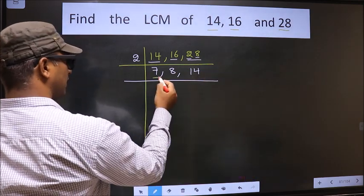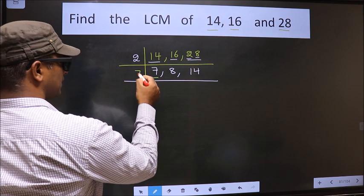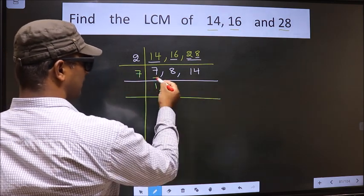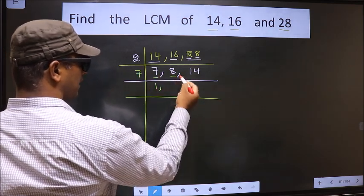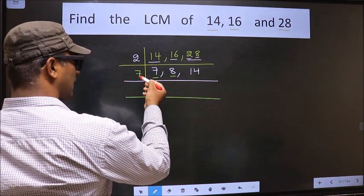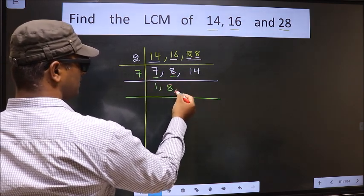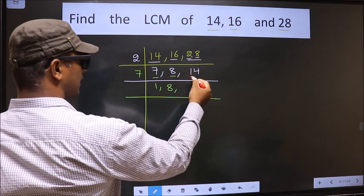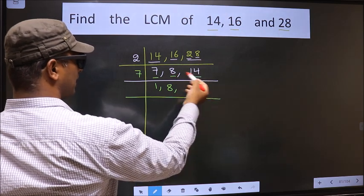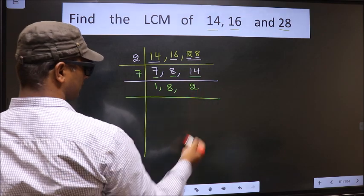Now here we have 7. 7 is a prime number, so 7 ones 7. The other number 8 — 8 is not divisible by 7, so we write it down as it is. The other number 14. When do we get 14 in the 7 table? 7 twos 14.